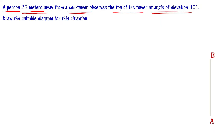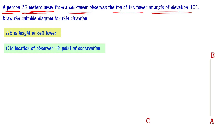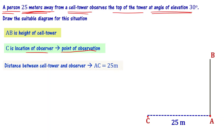Let us start with the cell tower. We label the cell tower as AB, where B is the top of the tower. The height of the cell tower is AB. The observer is standing 25 meters away from the tower, so we mark a point C. C is 25 meters away from A — C is the location of the observer, the point of observation. The distance between the cell tower and the observer is 25 meters. Now we have C and the top of the tower B.